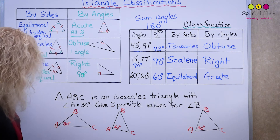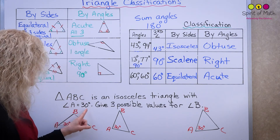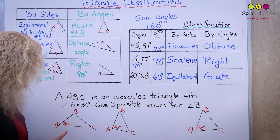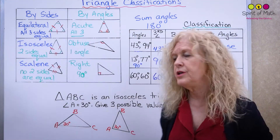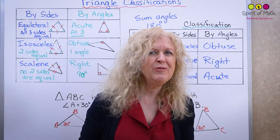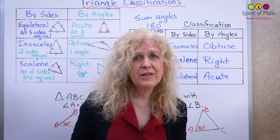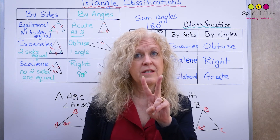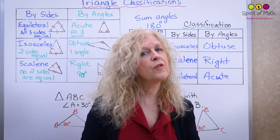Here's one more question: Triangle ABC is an isosceles triangle with angle A equal to 30 degrees. Give three possible values for angle B. It's a neat question because just knowing one angle and that it's isosceles, you can find exactly three different angles for angle B.